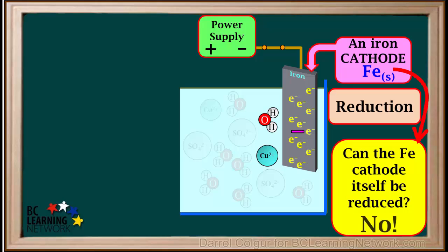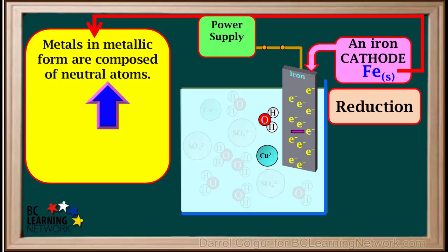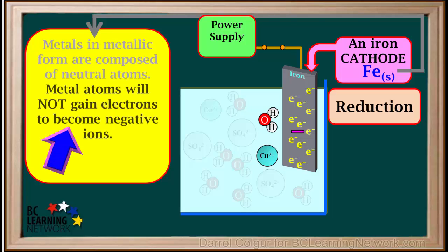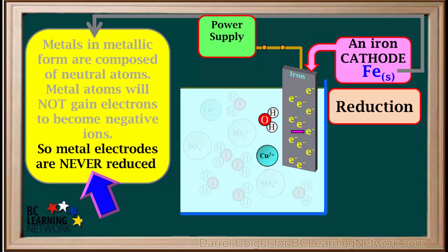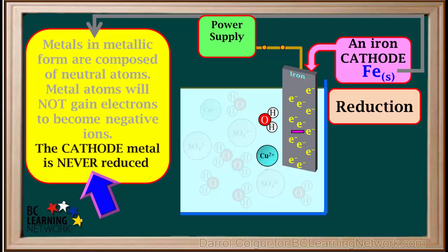The answer is no. Metals in metallic form are composed of neutral metal atoms. Metal atoms will not gain electrons to become negative metal ions. Negative metal ions cannot be formed. Metal atoms tend to lose electrons, not gain them. So metal electrodes are never reduced, and we can say that the cathode metal is never reduced.